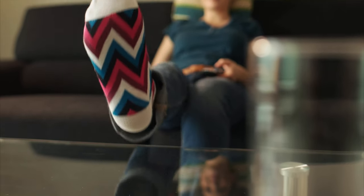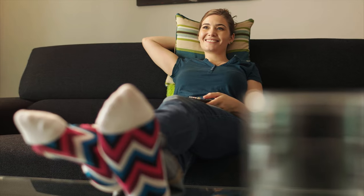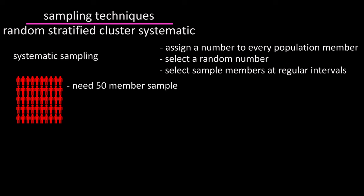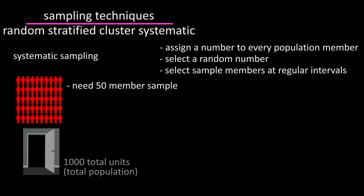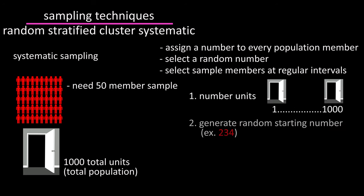For example, let's say you wanted to know how much time people living in a singles-only apartment complex spent watching Netflix on a weekly basis. You would want to get, say, a sample of 50 members. If there were a thousand units in the complex, you could number the units one to a thousand and generate a random starting number, say 234.